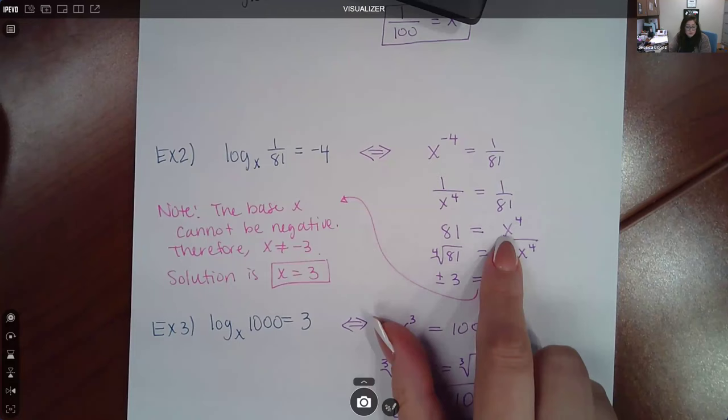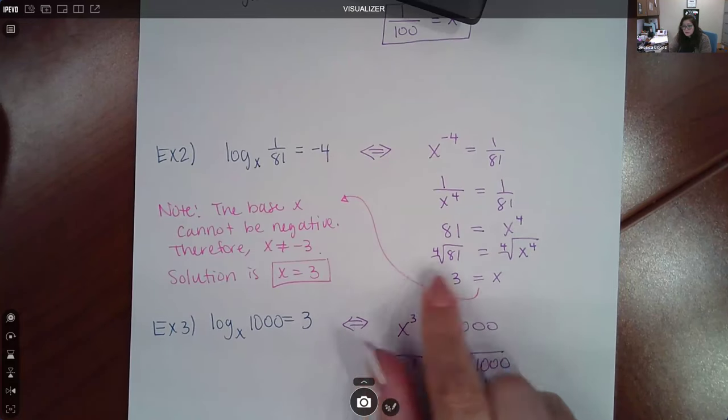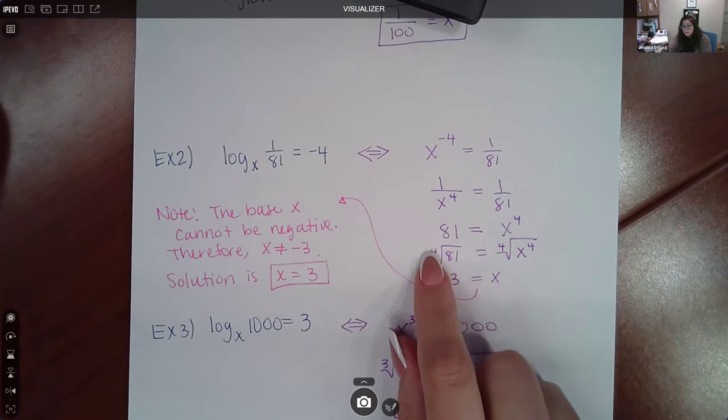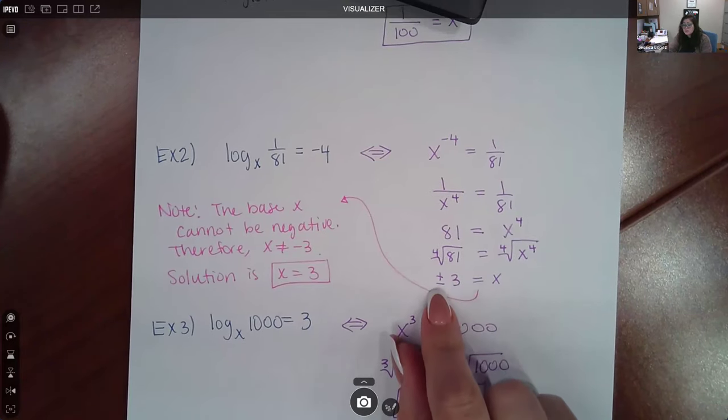Now, in order for me to solve for X, I do need to take the fourth root of both sides of this equation. So that does allow me to get X by itself, but because I'm taking an even root, like a square root, a fourth root, a sixth root, any even index here, you do get plus or minus.